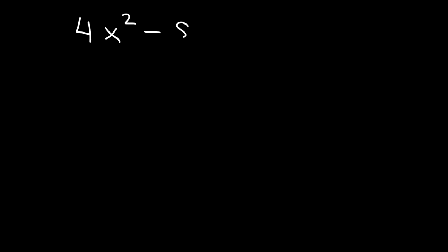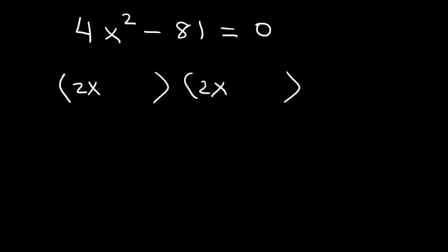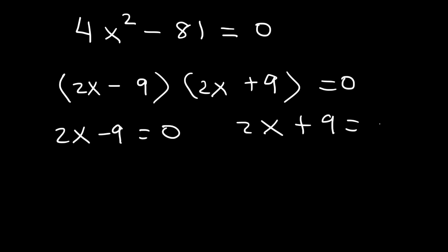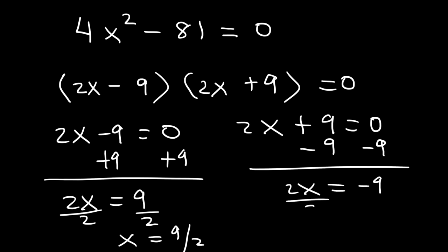Go ahead and try this: 4x squared minus 81 is equal to zero. The square root of 4x squared — the square root of 4 is 2 and the square root of x squared is x, so it's going to be 2x. The square root of 81 is 9. Now let's set each factor equal to zero. For the first factor, add 9 to both sides: 2x equals 9, then divide by 2, so x is 9 over 2. For the second factor, subtract 9 and divide by 2, giving x equals negative 9 over 2.